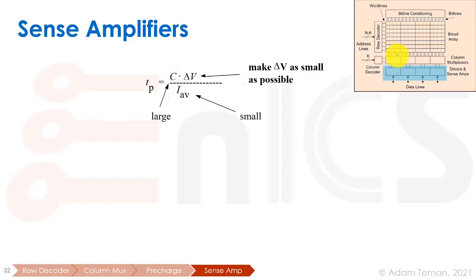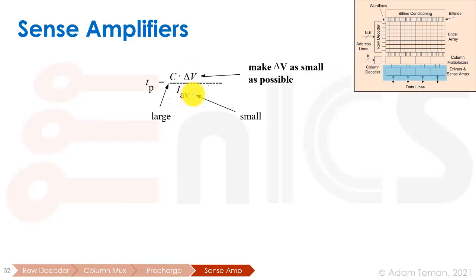For read speed, the capacitance on the bit lines is large because we want as many rows as possible connected. The average current discharging that word line is small, since we have one minimum-size transistor inside the SRAM cell. So to reduce delay, we make Delta V — the swing we need to discharge — as small as possible. That's the point of the sense amplifier: to recognize a small change and amplify it into a large one.